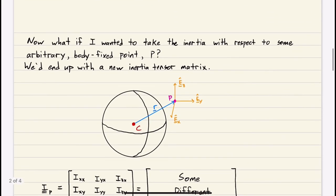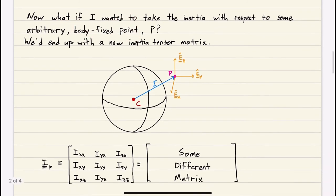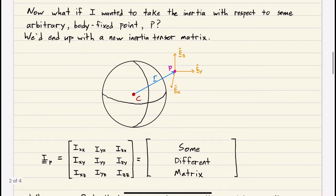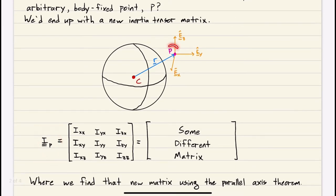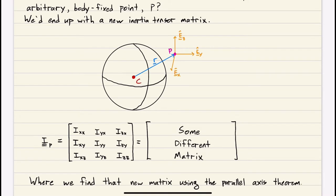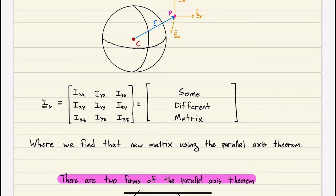Now, what if I wanted to take the inertia with respect to some arbitrary body-fixed point P — a point outside the sphere but still body-fixed? We'd end up with a new inertia tensor matrix at P. How do we get that? We get it by applying the parallel axis theorem. There are two forms: one set of equations for going from some arbitrary point to the center of mass, and another set for going from the center of mass to some arbitrary point.